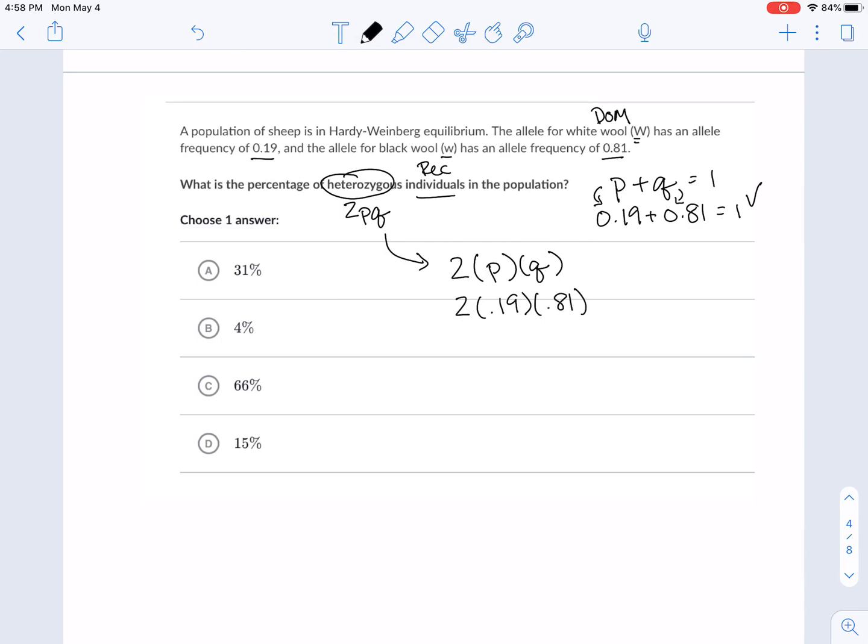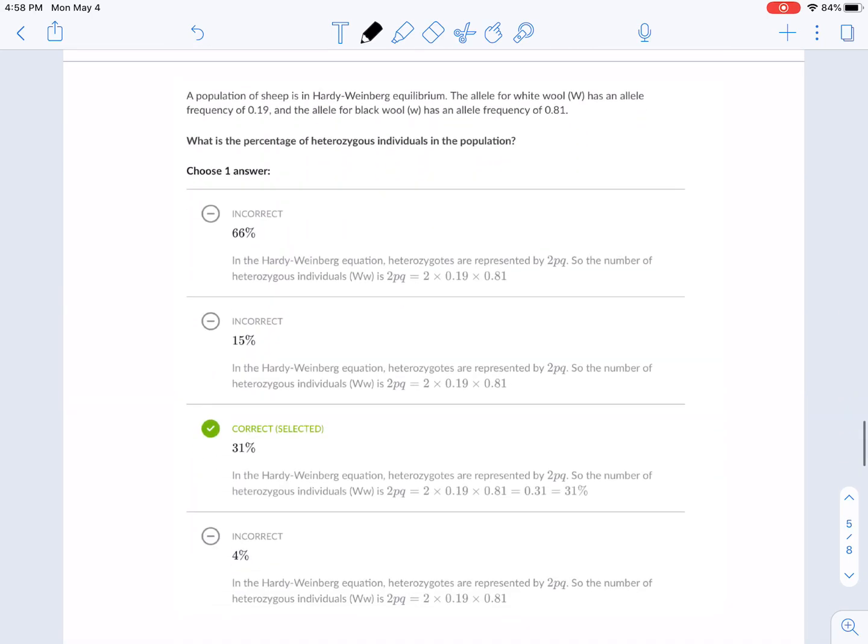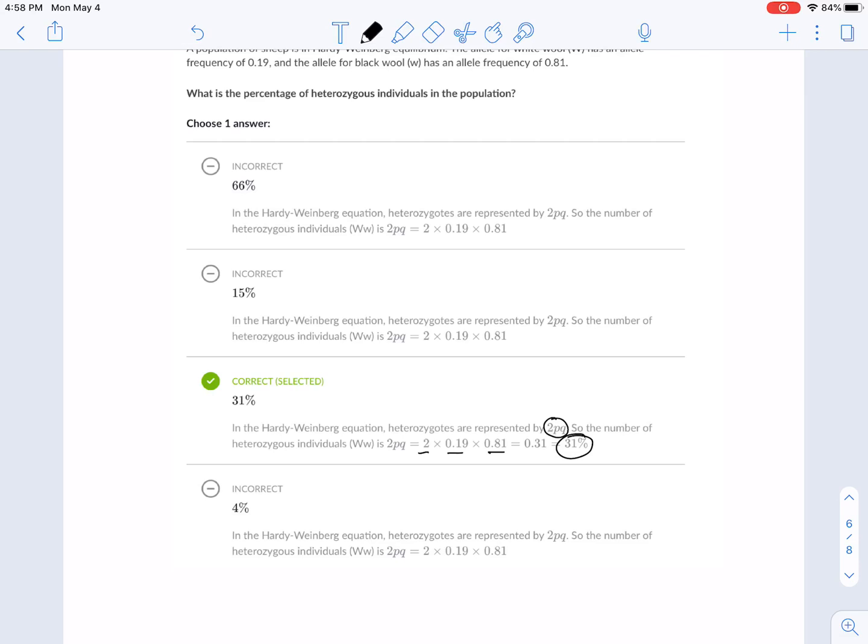And I believe that that gives you 31%. Again, calculators are a thing. Are we right? We are right. 31%. So 2PQ is how we get our heterozygous. It asks for that. It gave us P. It gave us Q. You just multiply them times 2 and that's where you get your answer. Again, if you did it incorrectly, it shows you what you did incorrectly there, which is nice.